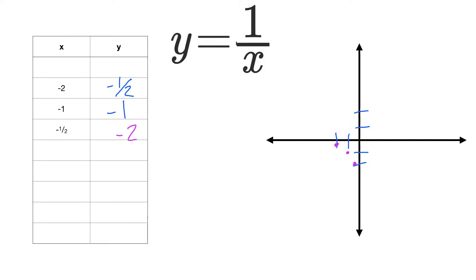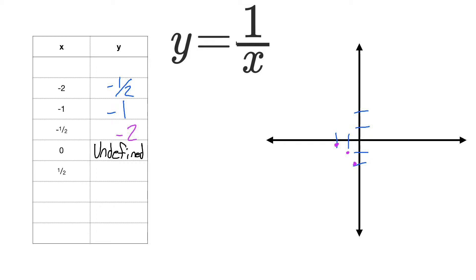You might notice there are some commonalities, and there seems to be a curve as we look at this equation. Now let's look at x equals 0. I plug in 1 divided by 0 — well, how many sets of 0 can I divide into 1? I actually cannot divide a number by 0, so that is undefined. For the positive side: one-half gives 2, 1 gives 1, and 2 gives one-half.